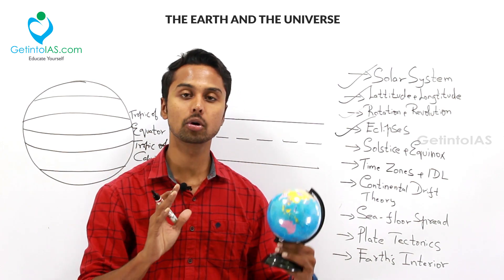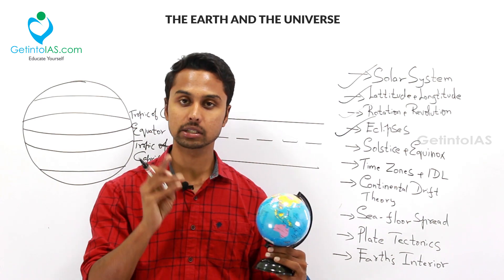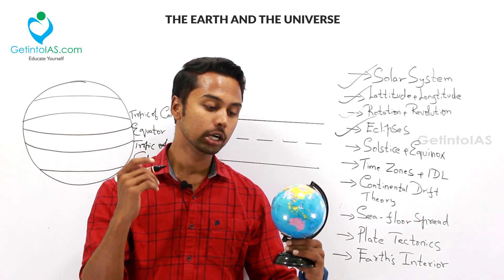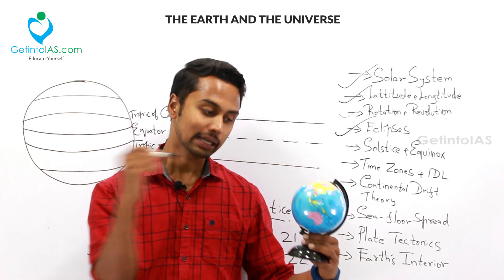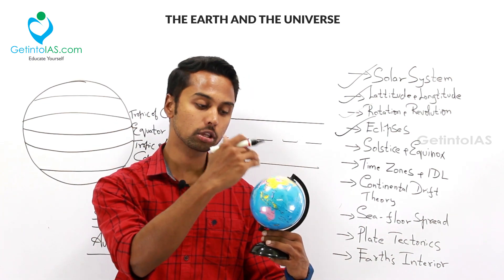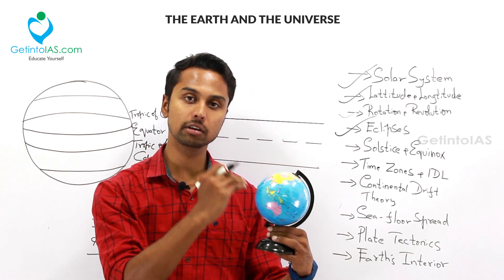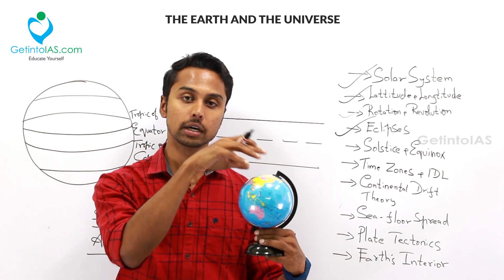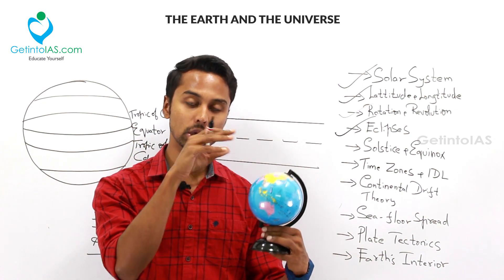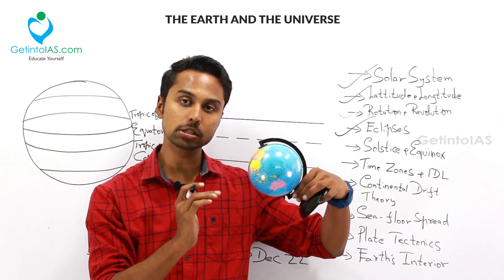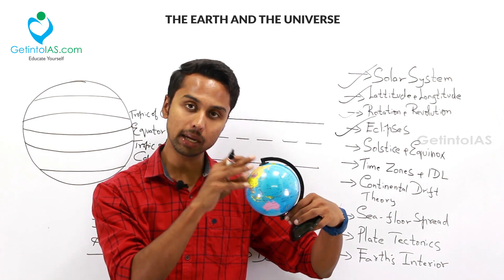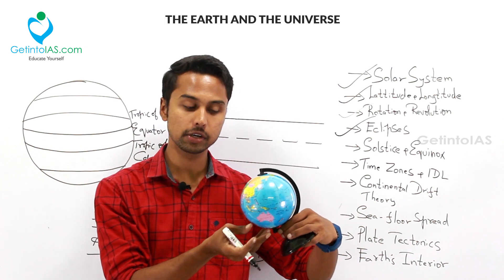During southern solstice, the southern hemisphere will experience the longest day and the shortest night, and the northern hemisphere vice versa. So that is about equinox, northern solstice, and southern solstice. Equinox happens twice in a year. During equinox, sun's rays directly hit the equator, so both northern and southern hemispheres receive equal amounts of sun's rays — equal days and equal nights. During northern solstice, sun hits the Tropic of Cancer — it is summer in the northern hemisphere and winter in the southern hemisphere.